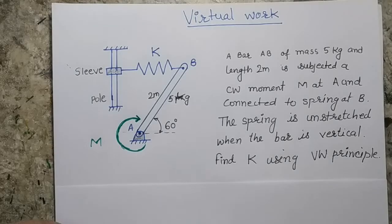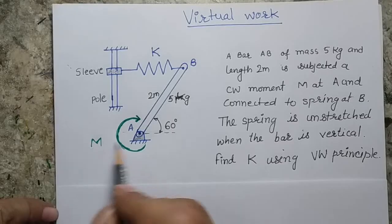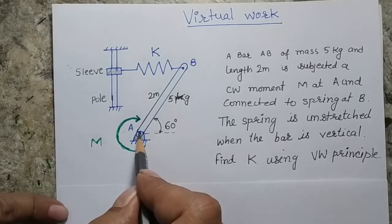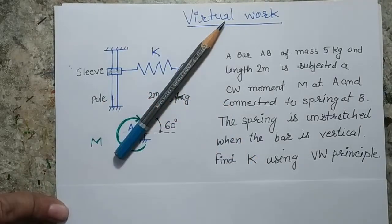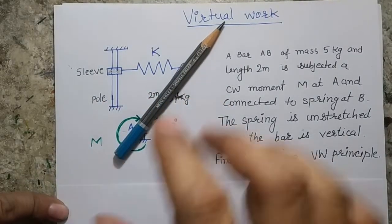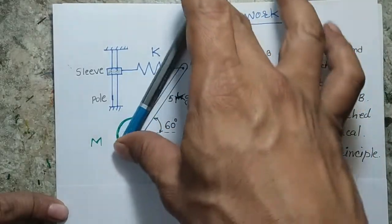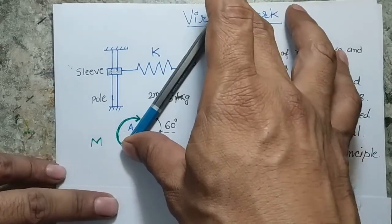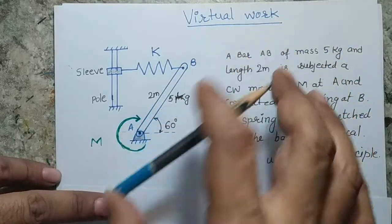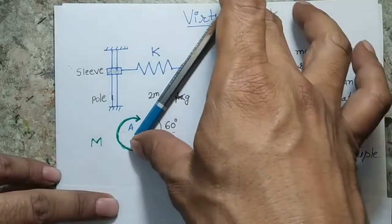If you look at the system carefully, you can identify the forces. There is a force M acting around point A, which is a pin joint. This is a rod which is pinned at point A, so it is able to rotate about A. Because of its own weight it is trying to rotate in one direction, and at the same time there is a moment also trying to rotate the rod in the clockwise sense.